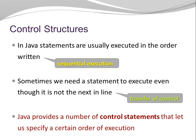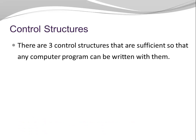Java provides a number of control statements that let us specify a certain order of execution. Before I go into details about the control statements provided by Java, I want to talk briefly about control structures. There are three control structures that are sufficient so that any computer program can be written with them.